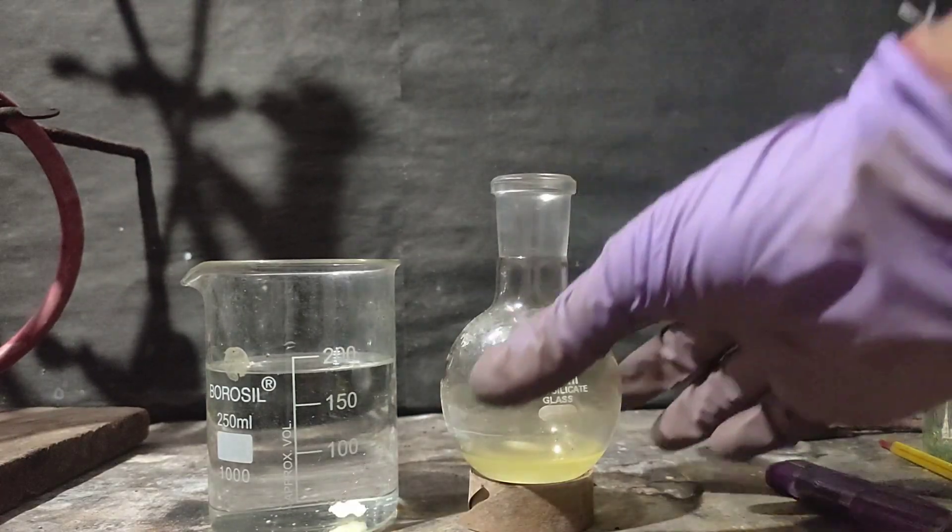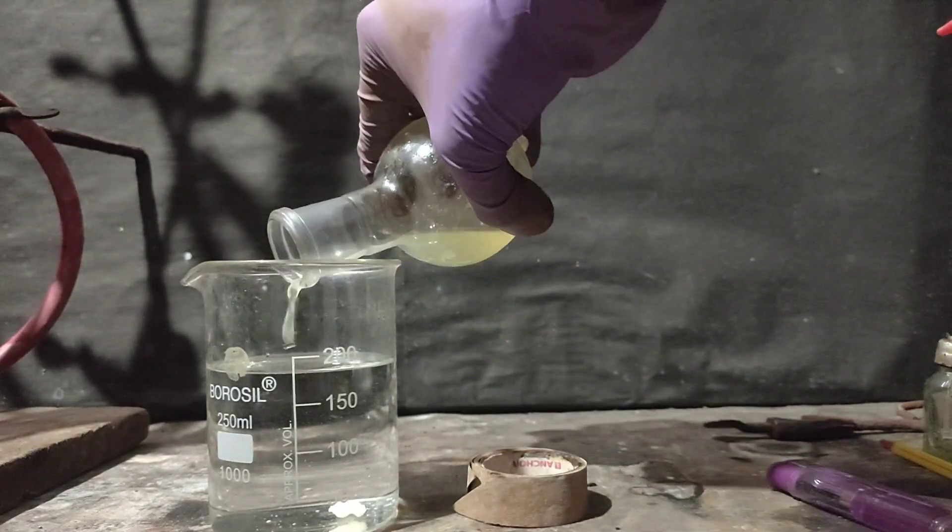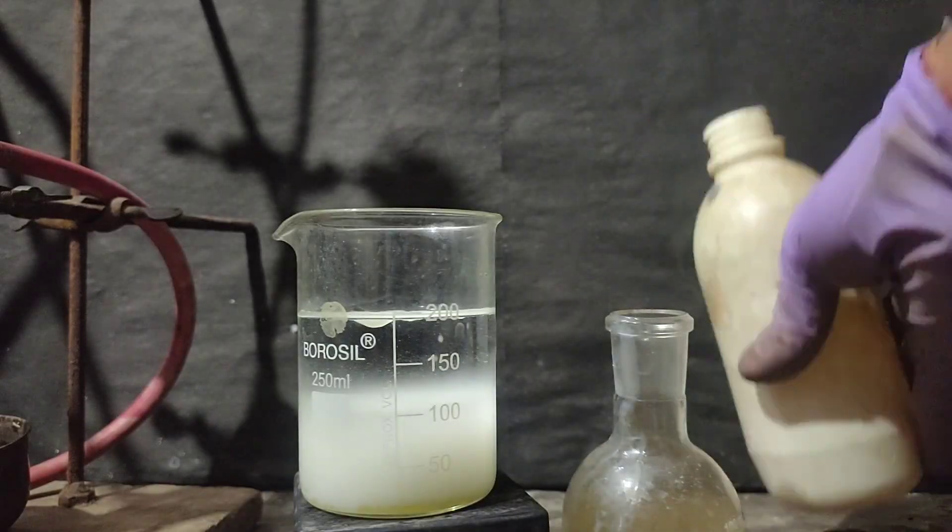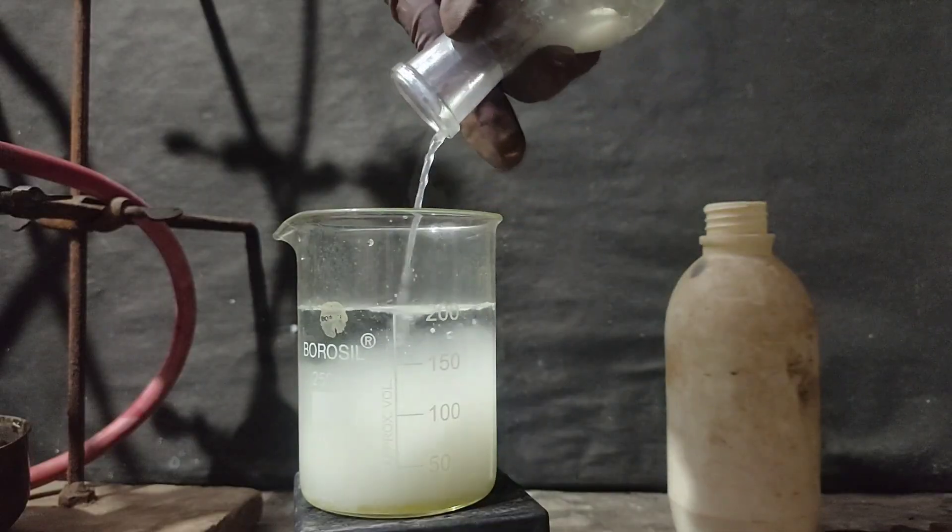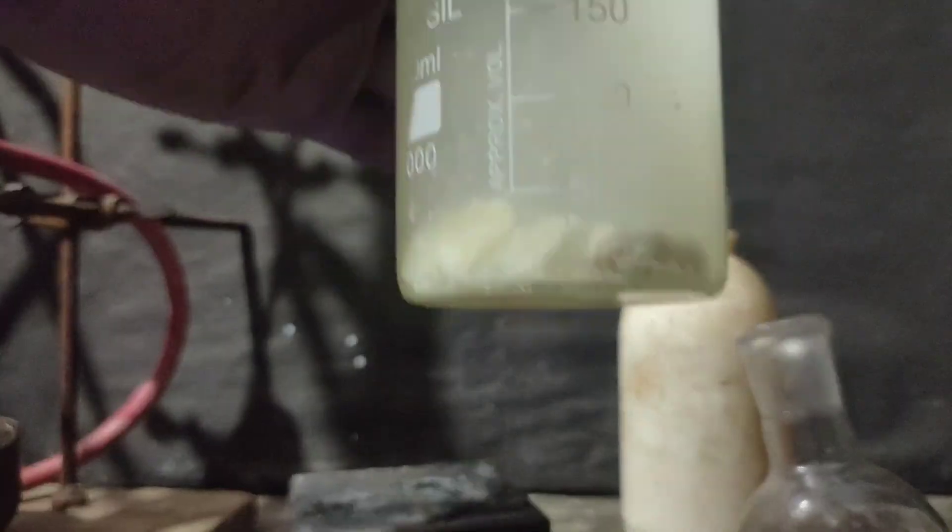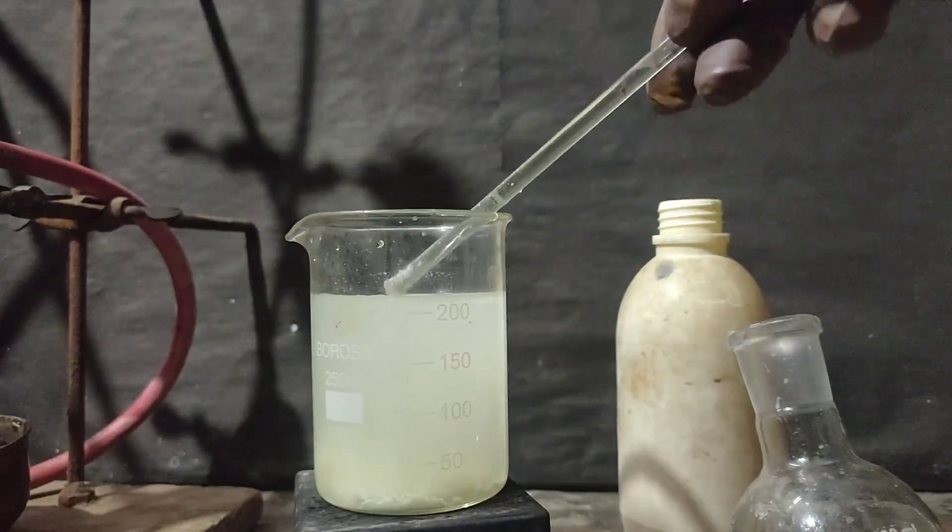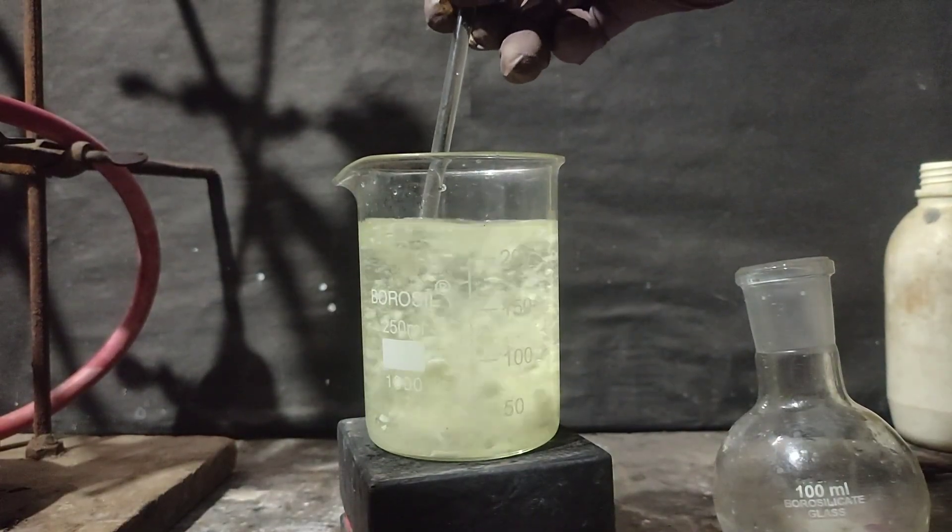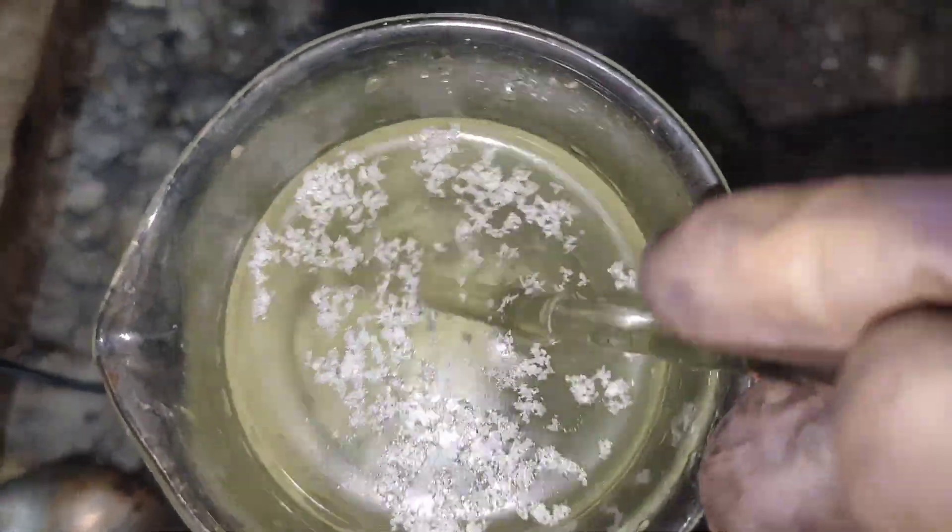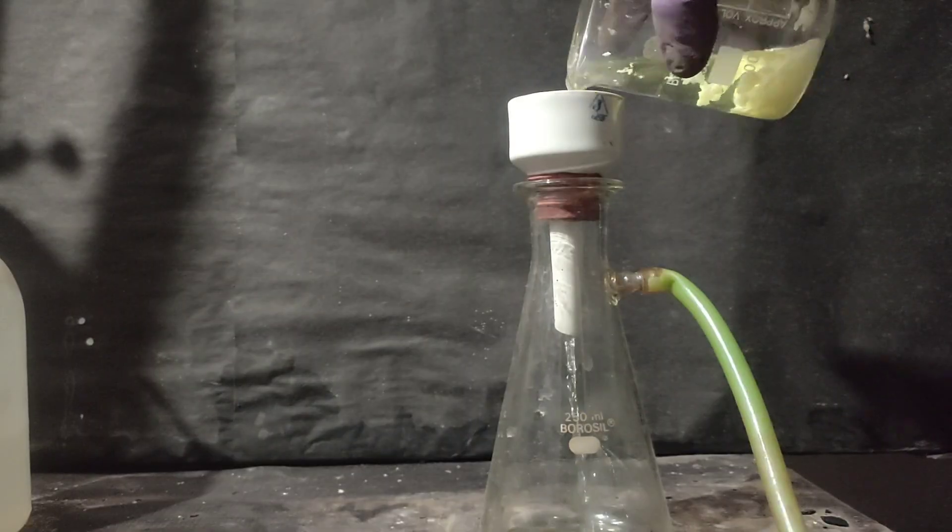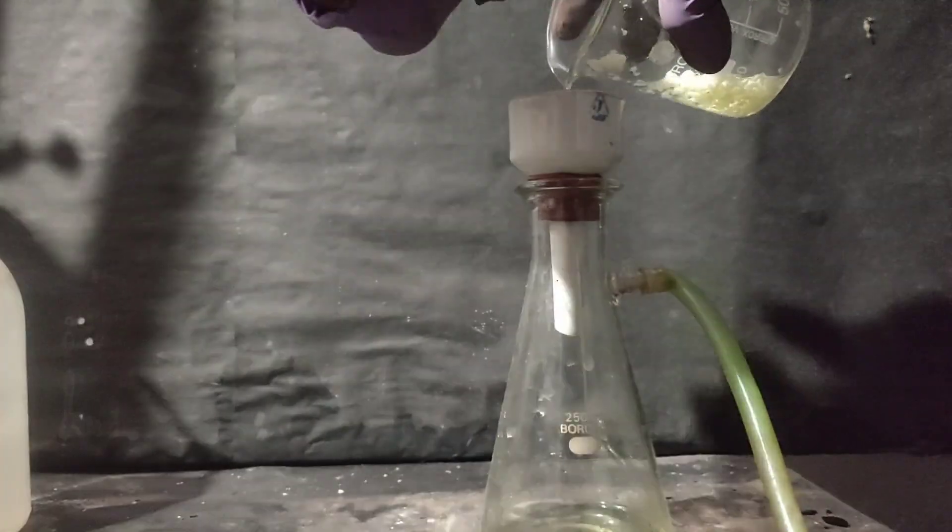I took a beaker filled with water and added the reaction mixture and that solid chunk from the test tube. I washed the RB flask with the same water and added the washings to the beaker. Then I broke up the solid chunk with a glass rod and stirred it with a magnetic stirrer. Soon the cloudy solution cleared up. Then the precipitate was vacuum filtered and washed with distilled water.